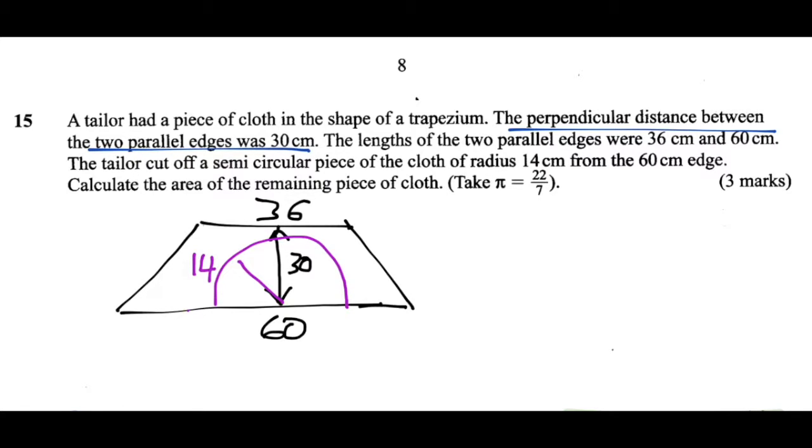And the difference is going to give us the remaining piece of cloth. So first let's find out the area of this trapezium shaped cloth. So the area of a trapezium is a half times a plus b times h.